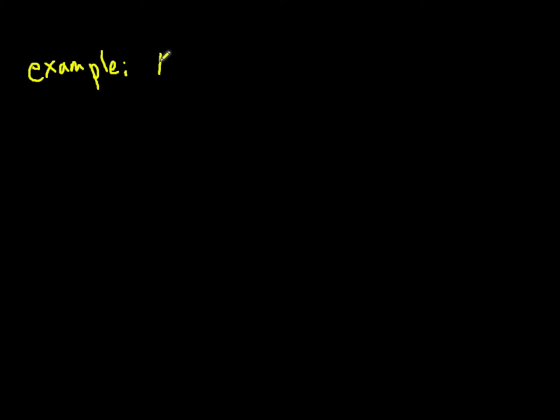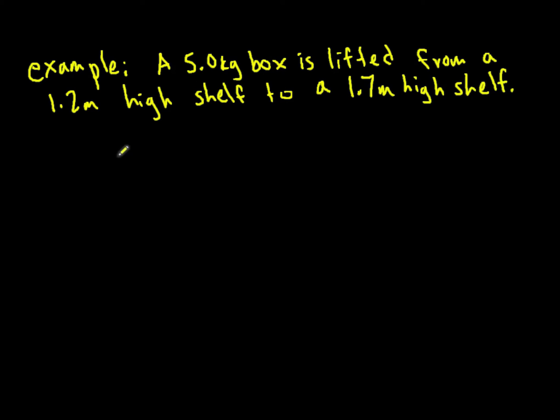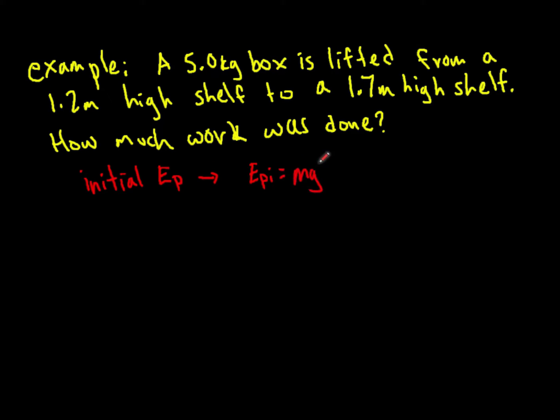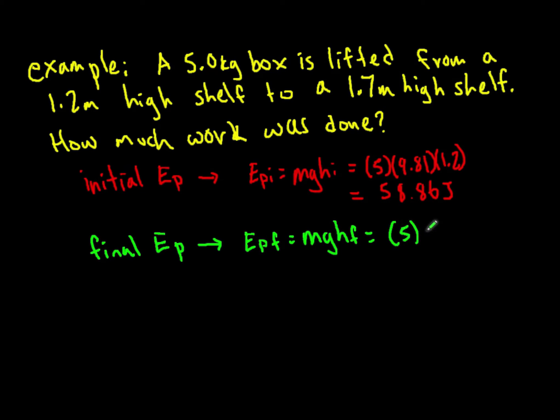For example, a 5kg box is lifted from a 1.2m high shelf to a 1.7m high shelf. The initial potential energy of the box when it was on the 1.2m high shelf was Mg times this height, which is 5 times 9.81 times 1.2. This gives us an initial potential energy of 58.86 joules. Later, the box is lifted, and we get a final potential energy. The final potential energy is equal to Mg times the final H, which is 5 times 9.81 times 1.7, which is 83.385 joules.